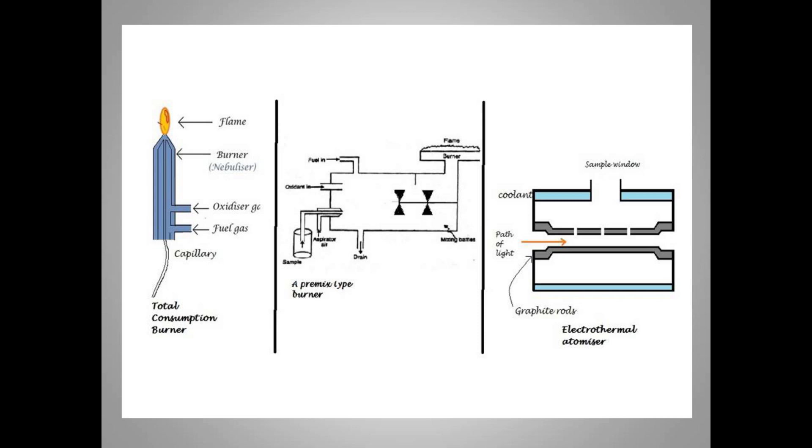In short, the first burner, total consumption burner, has three channels: the capillary through which sample enters, the fuel, and the oxidizer. All three combinations meet in the flame directly. The next is the premixed type of burner, where first the fuel, the oxidizer, and the sample get premixed and then reach the burner. The third burner is the graphite furnace. It has the graphite rod which are electrically heated. The sample enters through the window and this burner works in three stages.